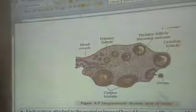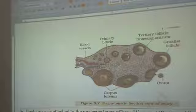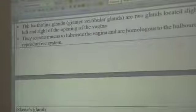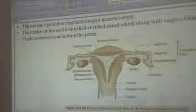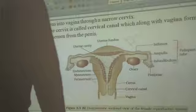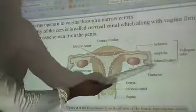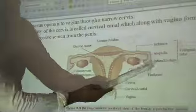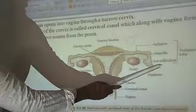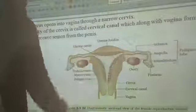That is about the structure of the ovary. Next, we have to discuss about the fallopian tube. The fallopian tube is mainly divided into three parts: infundibulum, ampulla, and isthmus.